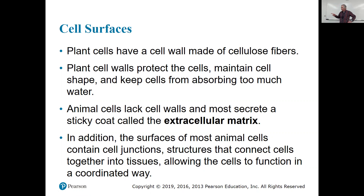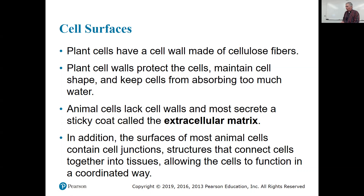Plant cell walls protect the cells, maintain cell shape, and keep cells in the zone with too much water. Animal cells do not have cell walls, but they secrete a sticky coat called the extracellular matrix. Most animal cells contain cell junctions that hold cells together, allow cell communication, and also stop things from dripping between cells.